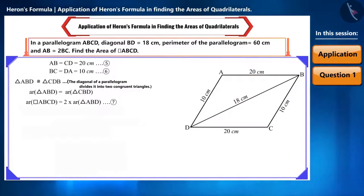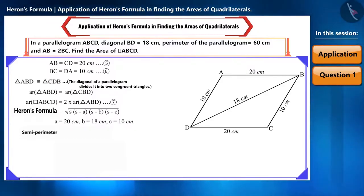So let's find the area of triangle ABD using Heron's formula. We will substitute the value of A equal to 20 cm, B equal to 18 cm and C equal to 10 cm. Now, we will find the semi-perimeter that is S. Here, we got semi-perimeter as 24 cm.